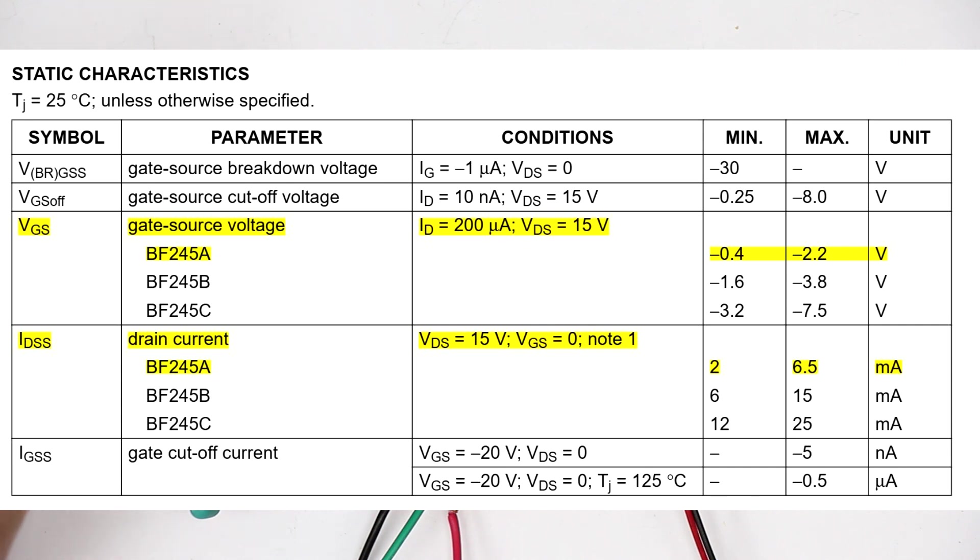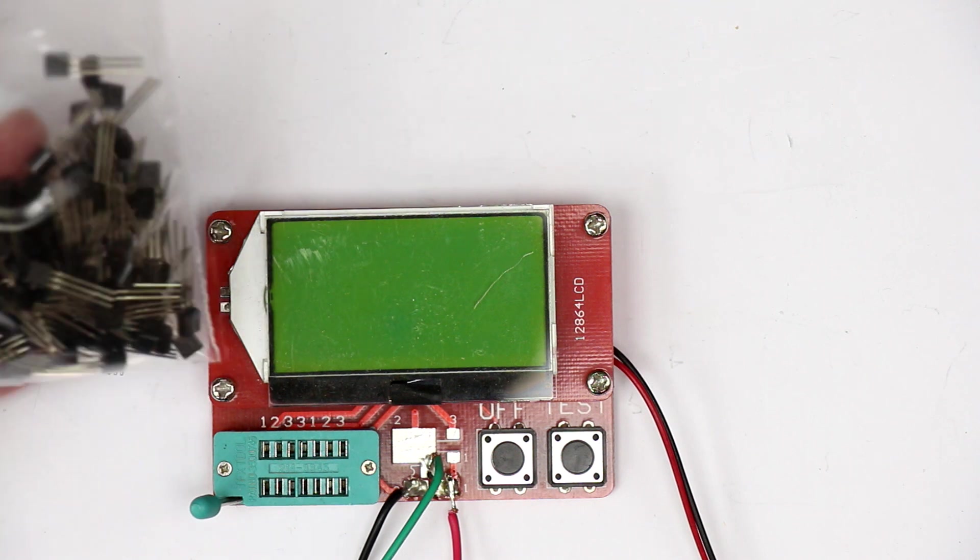The A version is not produced anymore. The A version is what most people are searching for because it has a turn-on voltage of around two or three volts so it can be used with a 4.5 volt battery.